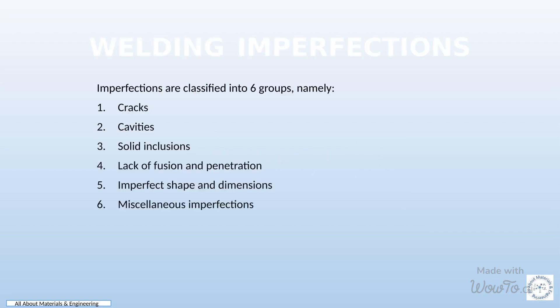Imperfections in various materials and structures can be categorized into six main groups. The first group is cracks, which refer to fractures or breaks in the material. The second group is cavities — voids or empty spaces within the material. The third group is solid inclusions, which are foreign objects or substances present within the material.